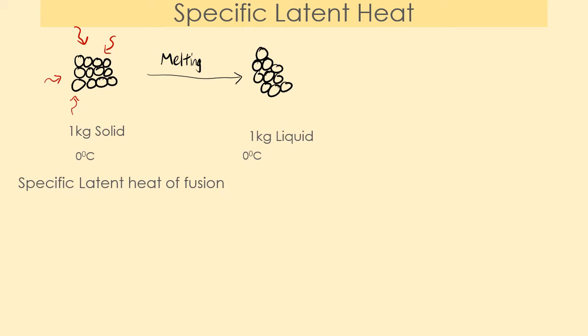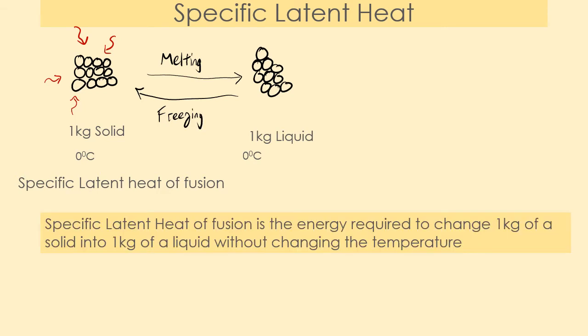It also happens to be the same energy required if we're turning a liquid into a solid, so it works in reverse as well — that process going backwards is called freezing. So the specific latent heat of fusion is the energy required to change one kilogram of a solid into one kilogram of a liquid without changing the temperature. That key part — without changing the temperature — also applies in reverse when turning from a liquid to a solid.